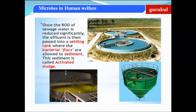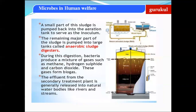Once the BOD of the sewage water reduces significantly, the effluent is passed into a settling tank where the flocs are allowed to sediment. This sediment is called activated sludge. A small portion of the activated sludge is pumped back into the aeration tank to serve as an inoculum for continued microbial growth.